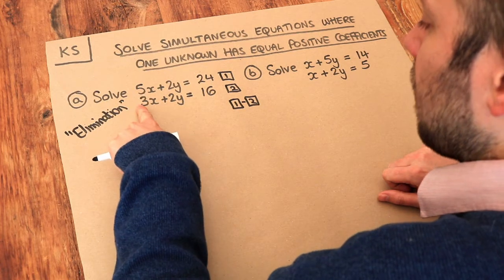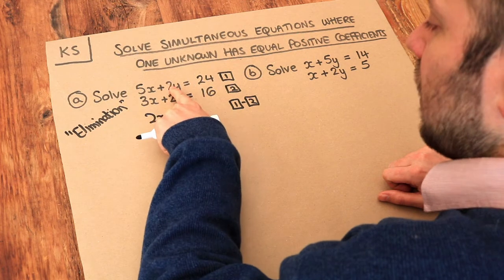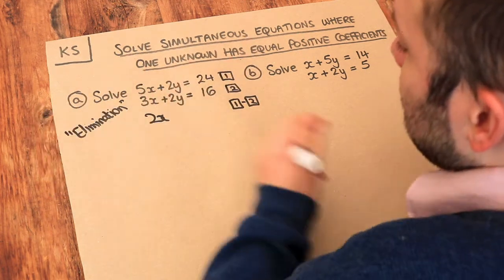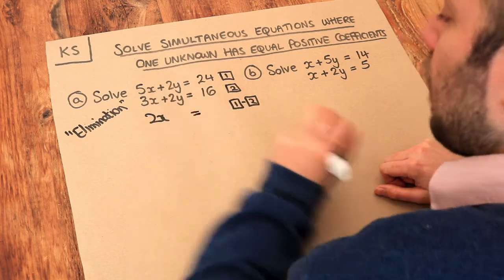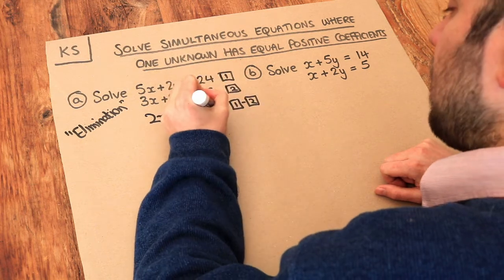Well 5x minus 3x would give you 2x. If I did the 2y minus that 2y, well that's 0y, that just disappears. And then finally we have the 24 minus a 16 which is 8.